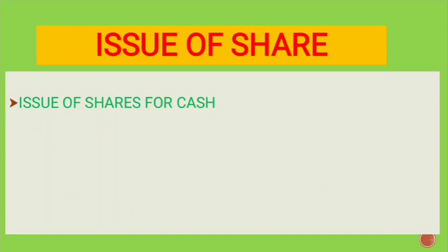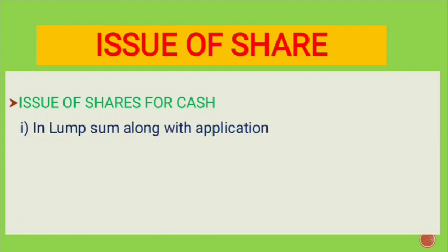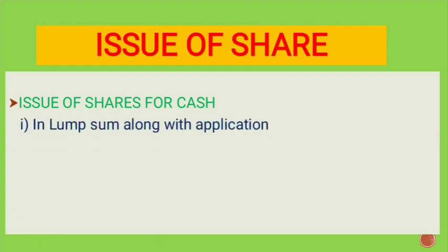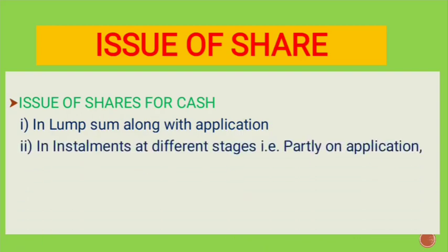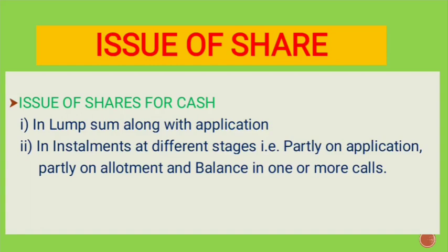A company can issue its shares for cash. The cash received through issue of shares can be collected in two ways. First is lump sum along with the application — meaning the company receives the entire share amount at the time of application. Second is in installments at different stages: partly on application, partly on allotment, and balance in one or more calls.